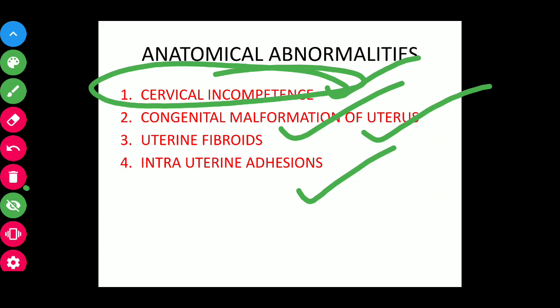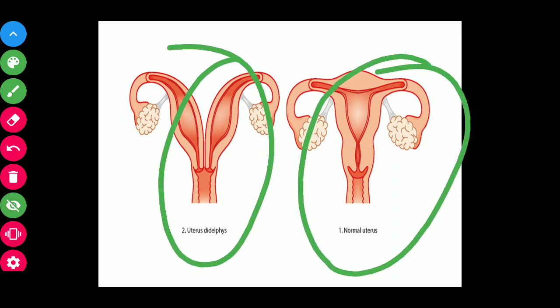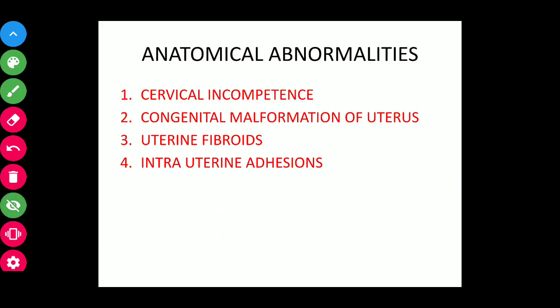In a septate uterus, a septum divides the fundal area into two cavities. This results in reduced expansile property of the uterus, reduced placental vascularity, and increased uterine irritability and contractility.